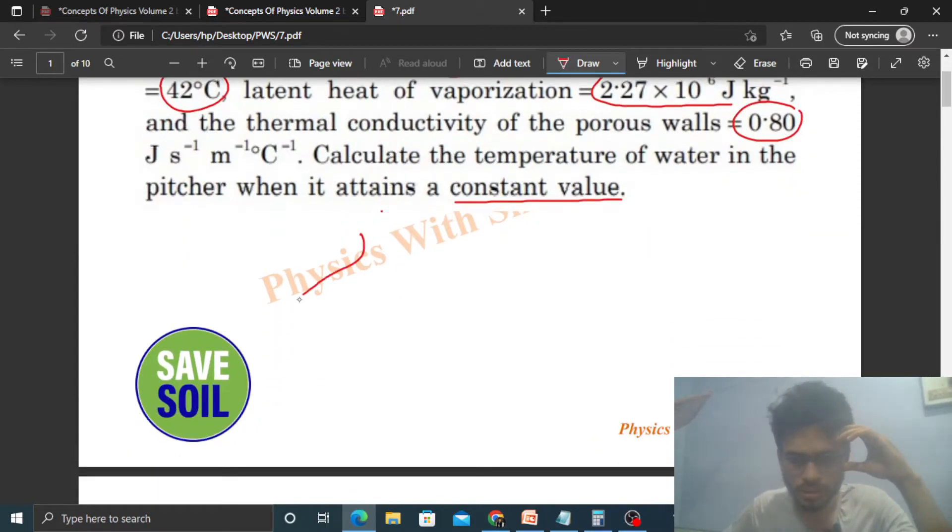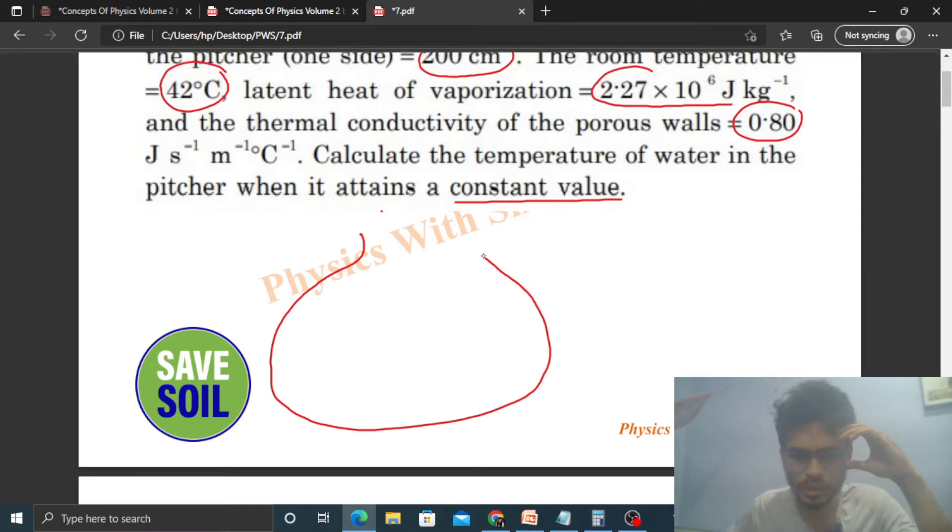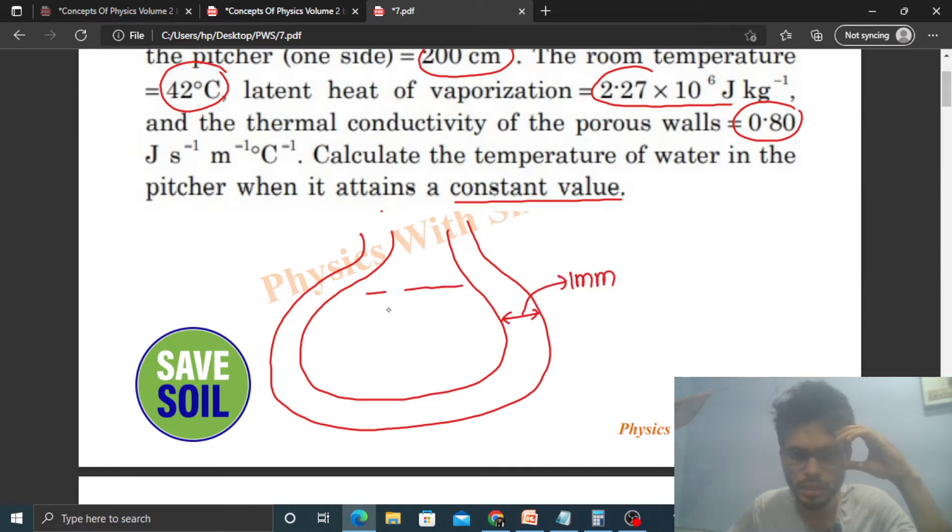So we have a pitcher like this with walls. The thickness of the walls is 1mm. Inside this pitcher, we have 10 kilogram of water present. Let's say the temperature of water is T.